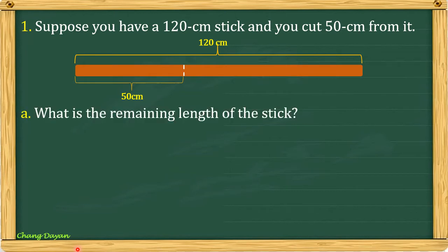The total length is 120 cm and I cut 50 cm from it. First question, what is the remaining length of the stick? To find out the remaining length of the stick, you have to subtract 50 cm from 120 cm. And the difference here is 70 cm. So meaning from here until this end measures 70 cm.